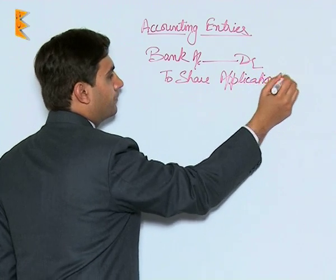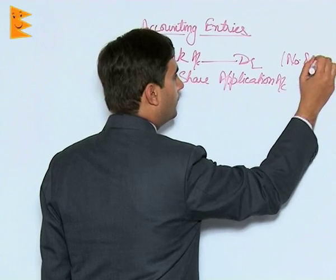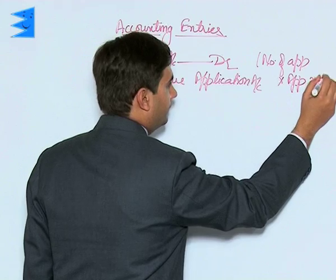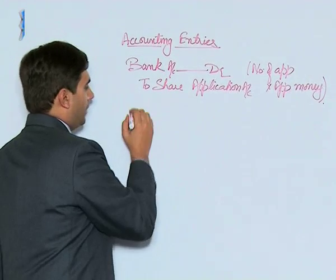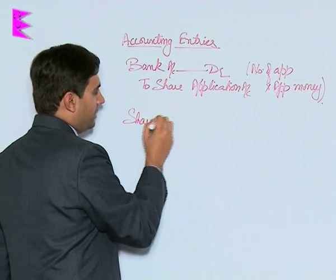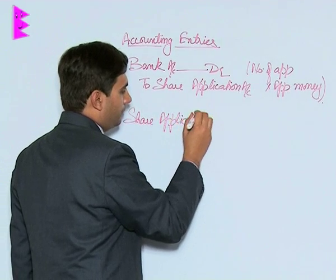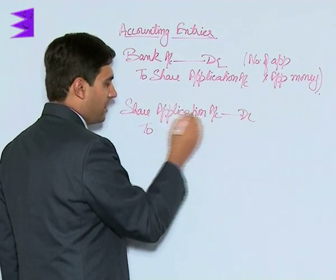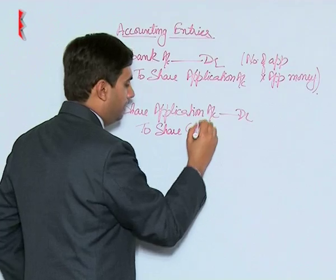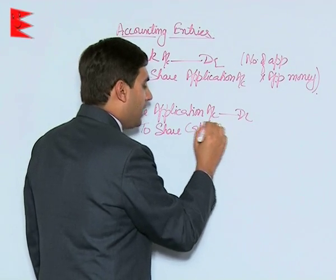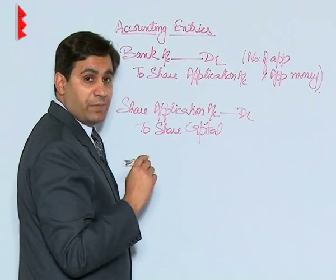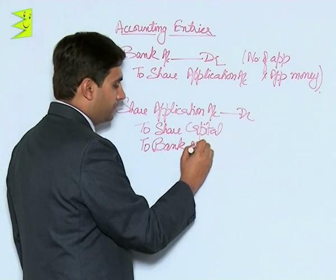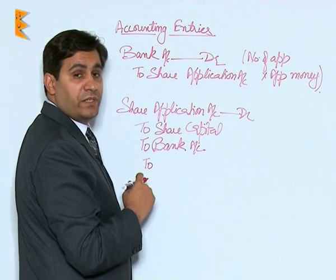The application money entry is: number of applications into application money. The next entry is to transfer this application money to share capital — share application to share capital. In case any surplus or excess applications have been received, the amount has to be refunded through bank.